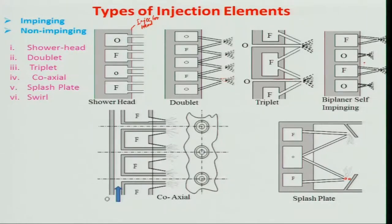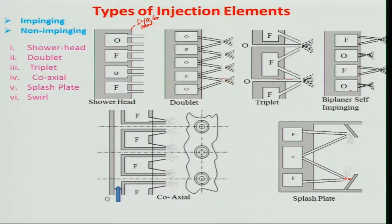The self-impinging atomizer is generally used for non-hypergolic propellant, where separate ignition is needed and no liquid phase reactions occur. However, the mixing time should be more so that oxidizer mixes with fuel in the gas or droplet phase. As a result, the length of the combustor will be higher. This is used for non-hypergolic propellant.